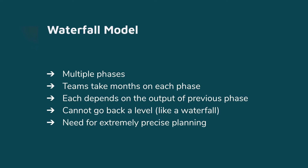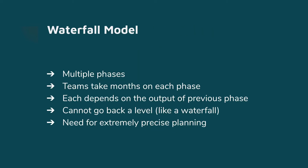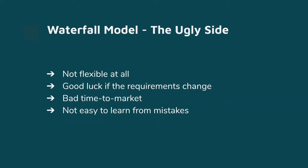Each phase depends on the output of the previous phase, and you cannot go back a level. So if you are in the implementation phase already writing the software, you cannot go back and change the design — well, you can, but it's going to come with a huge cost. That means you have to have extremely precise planning and the requirements cannot change. So what's wrong with the waterfall model?